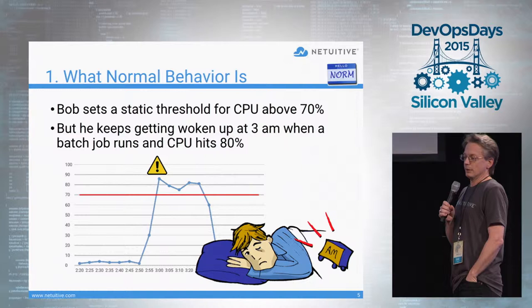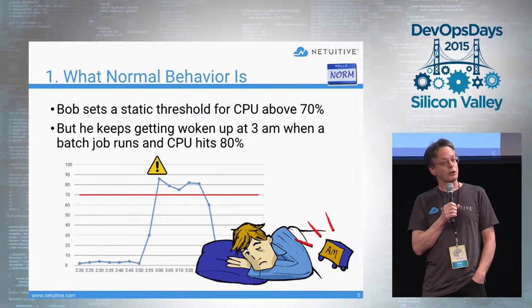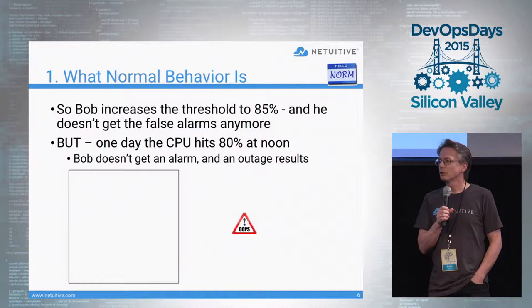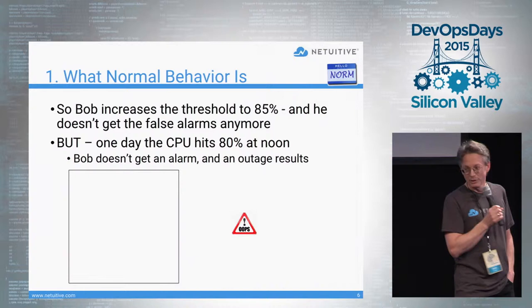Bob has set up static thresholds on his servers to alarm when CPU utilization is too high. But there are a number of CPU-intensive batch jobs that run every night, and whenever they cross Bob's thresholds, they trigger false alarms that wake him up. So Bob increases the threshold to 85%.